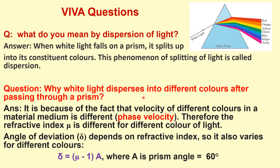Why does white light disperse into different colors after passing through a prism? It is because the velocity of different colors in a material medium is different — that is the phase velocity — so the refractive index mu is different for different colors of light, and the angle of deviation delta depends on refractive index, so it also varies for different colors.